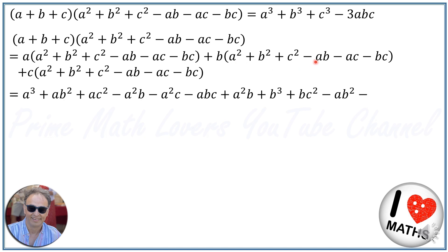And here we'll have plus a squared c plus bc squared plus c cubed minus abc minus ac squared minus bc squared. And we can simplify this by eliminating terms.